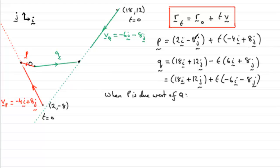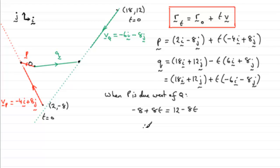So for P, the j component is minus 8 plus 8T, and that equals the j component for Q, which is 12 minus 8T. We solve for T: adding 8T to both sides and adding 8 to both sides gives 16T equals 20. Dividing both sides by 16, T equals 20 over 16, which cancels down to 5 over 4 — that is 1 and a quarter hours.